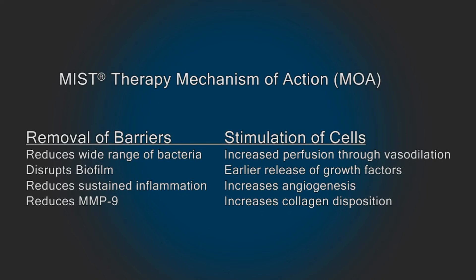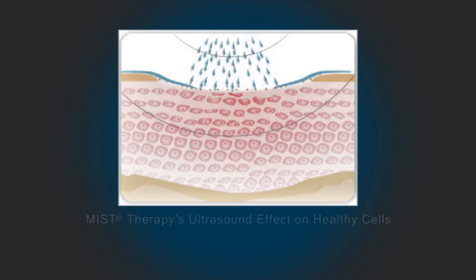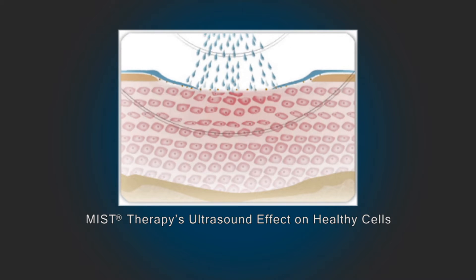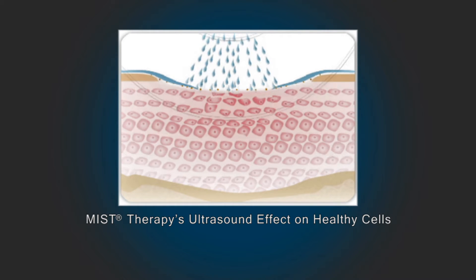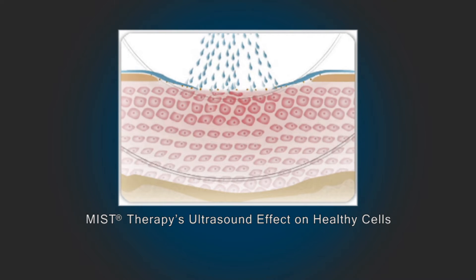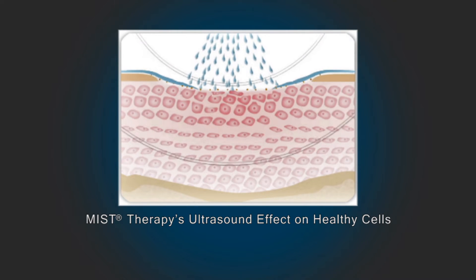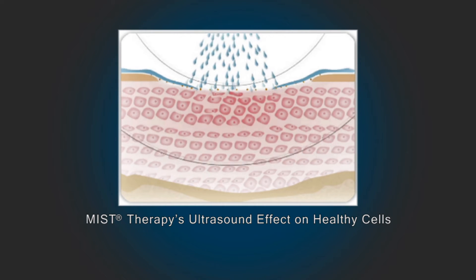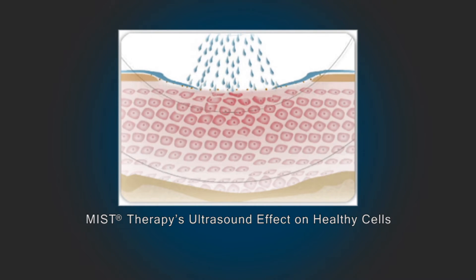The gentle sound waves of MIST therapy mechanically stimulate cells within and below the wound bed, impacting a wide range of factors as seen here. All of these factors work together to restore cellular balance and advance the wound to healing. As the MIST ultrasound waves come in contact with the cells within and below the wound bed, the shapes of the cells are changed. Like a balloon filled with water, these cells elongate and deform when manipulated by this mechanical stimulation. The result is removal of healing barriers while actively stimulating cells to advance the wound to healing.